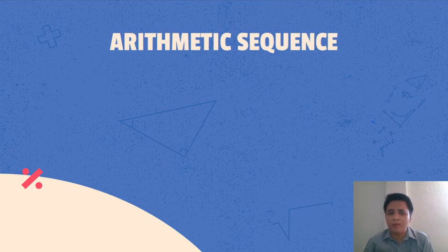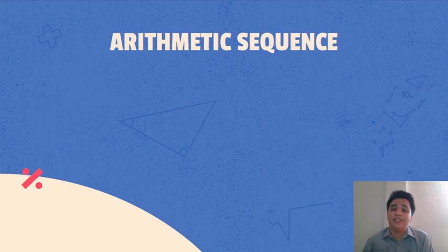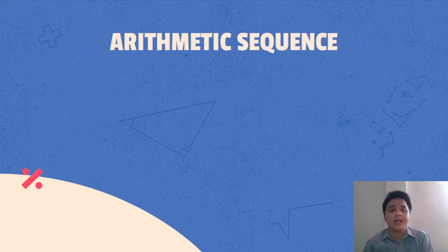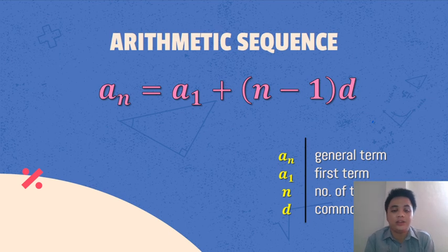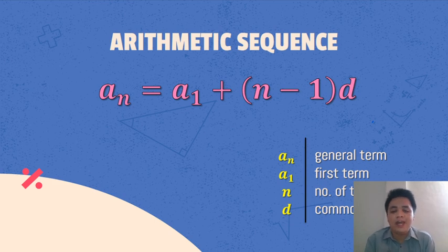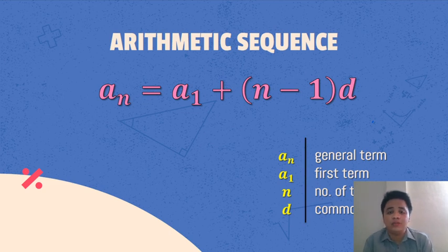For a short review — ano ba ang arithmetic sequence? It is also called arithmetic progression, in which it is a numerical pattern where the difference between any two consecutive terms is always constant. As we recall the formula to use: A sub n equals A sub 1 plus (n minus 1) multiplied by d, where A sub n is the general term, A sub 1 is the first term, n is the number of terms, and d is the common difference. Ito yung formula na gagamitin natin for our arithmetic sequence.